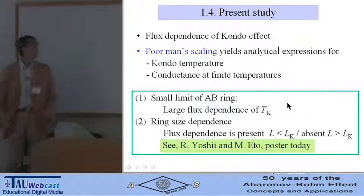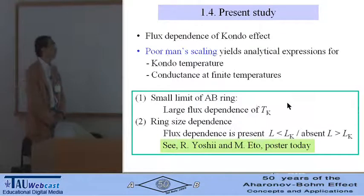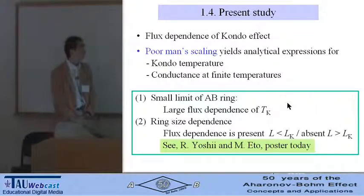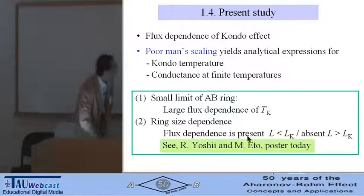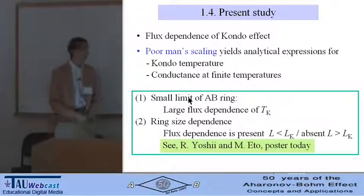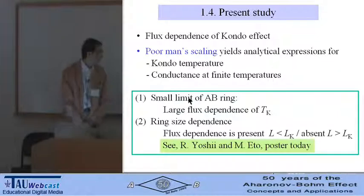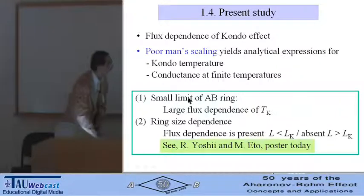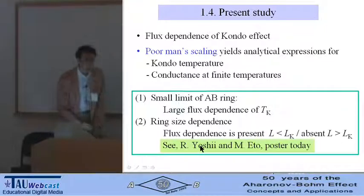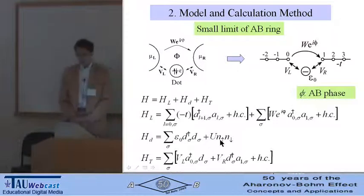In the present study, we examine the flux dependence of the Kondo effect using the poor man's scaling. We obtain analytical expressions for the Kondo temperature and conductance at finite temperatures. First, I examine the small limit of the Aharonov-Bohm ring and show the large flux dependence of the Kondo temperature. Second, I briefly mention the ring size dependence. For the detail, please see the poster by Ryosuke today.